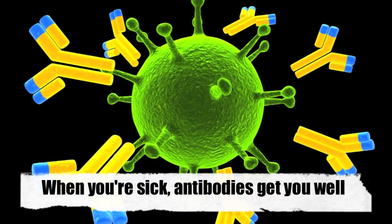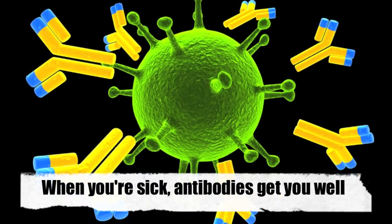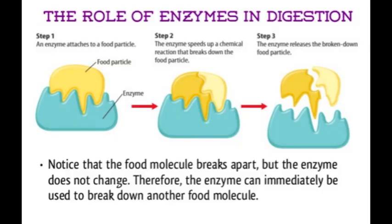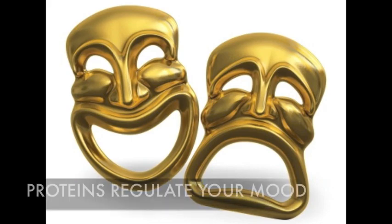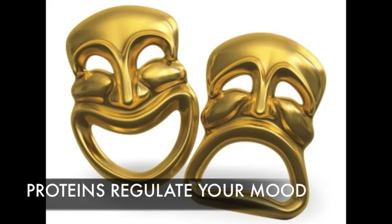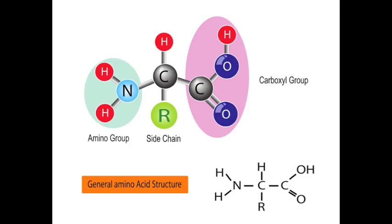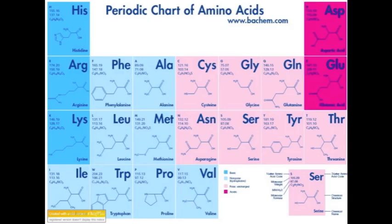When you're sick, antibodies get you well. Enzymes help digest your food, and proteins regulate your mood. But what are they made of? Amino acids — 20 to be exact. In what foods can you find that?